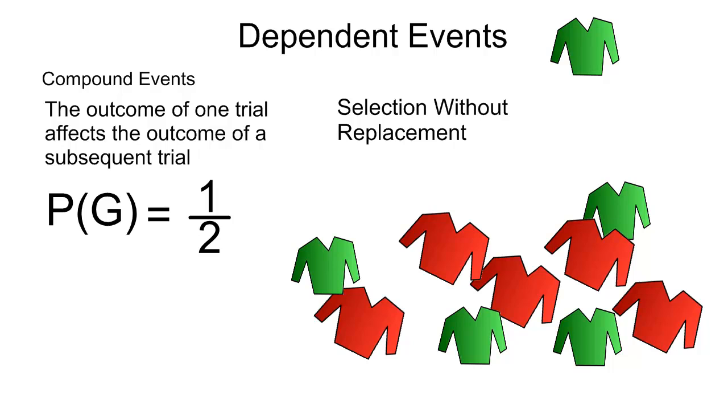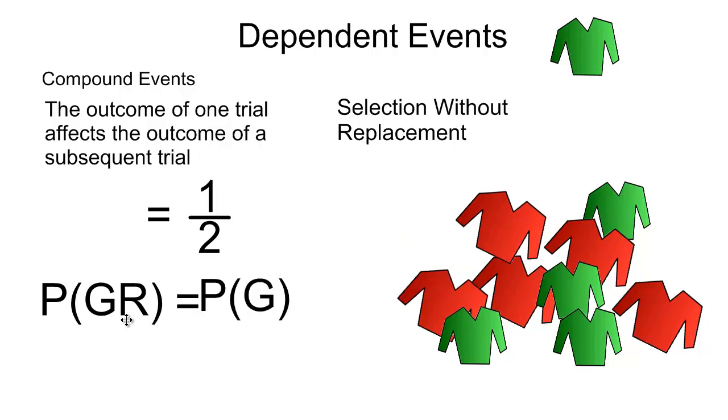So what's the probability of getting a green and then a red cardigan in this experiment? Well, once again, we can just use our multiplication rule. And so the probability of selecting a green and then a red cardigan is equal to the probability of selecting a green cardigan.